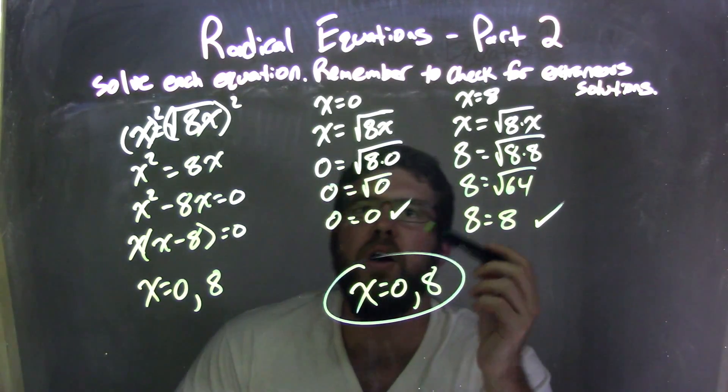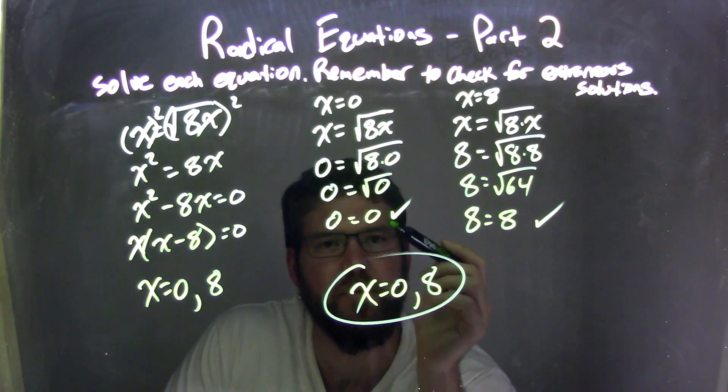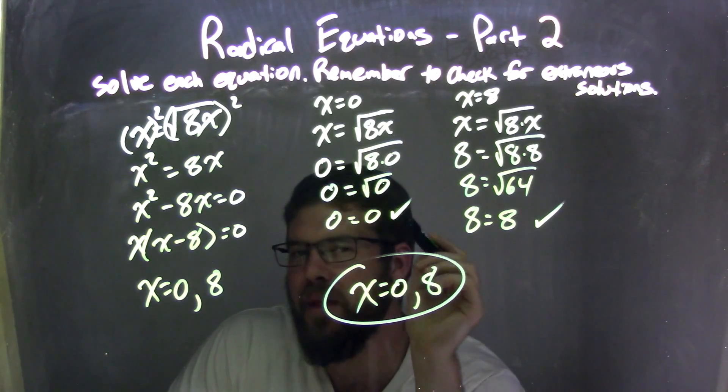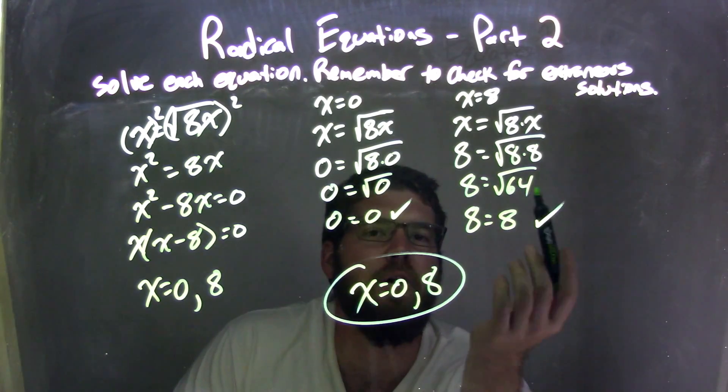I checked both of them. The first one, when I checked it, I ended up getting 0 equals 0, and I simplified it. And I knew from there, both left and right are equal. Great, 0 is a real solution.